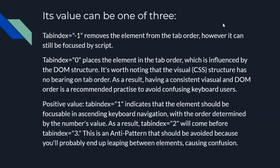tabIndex handles values in three forms. The first is a negative value, which removes the element from the tab order — any component with a negative tabIndex will not receive focus when using the Tab key. The second is tabIndex 0, which places the element in the tab order influenced by the DOM structure, so the ordering depends on what element comes first in the DOM rather than an explicit number.